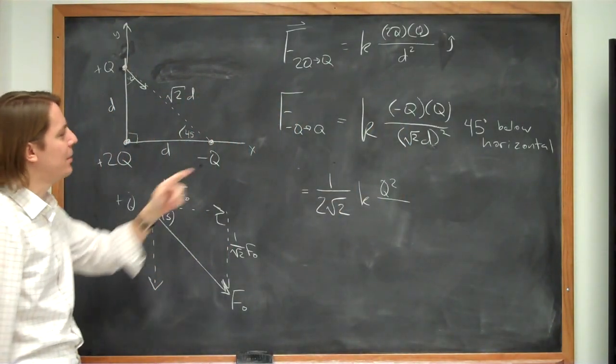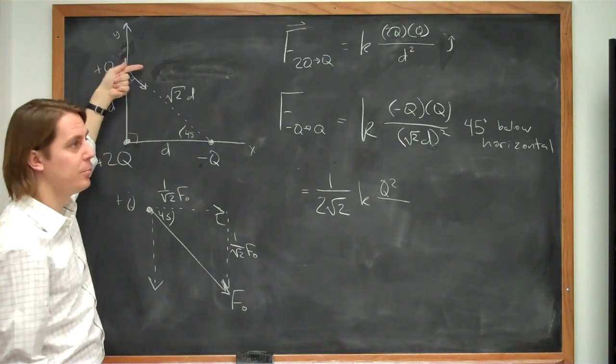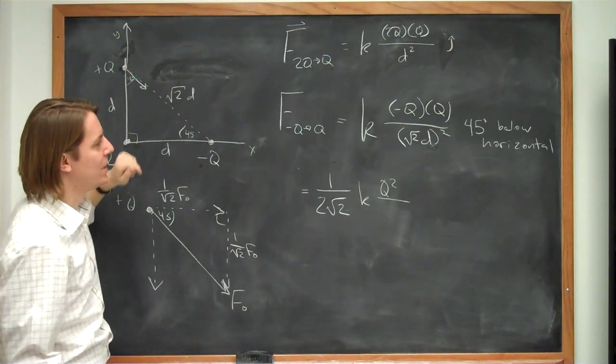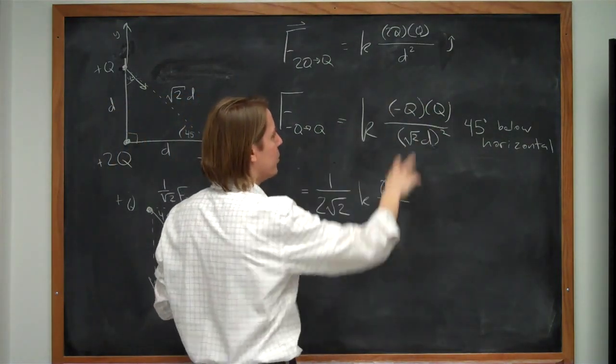I'm ignoring that minus sign. And let's look at why. The reason I'm ignoring that minus sign is because we're just getting the direction by just sort of looking at the problem by inspection. We're not really getting the direction from whether we have pluses or minuses here. So that minus, we'll just ignore. It's q squared.